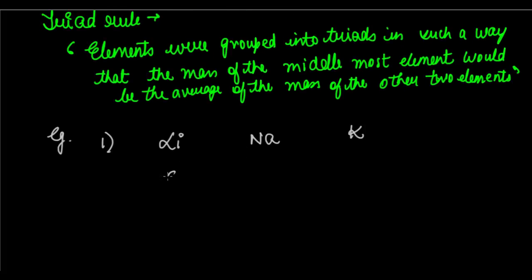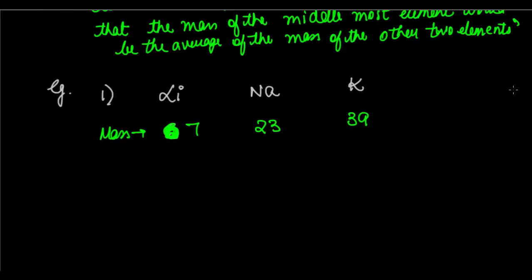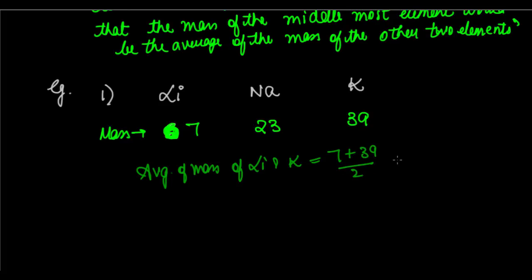The mass of lithium is 7, the mass of sodium is 23, and the mass of potassium is 39. Now let's apply the triad rule. The average of the mass of lithium and potassium equals 7 plus 39 divided by 2, which equals 46 divided by 2, which equals 23 — equal to the mass of sodium.